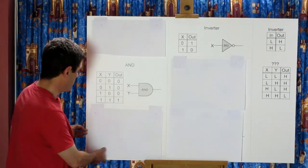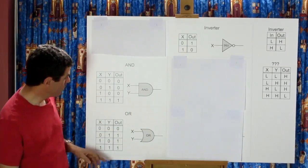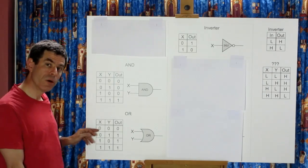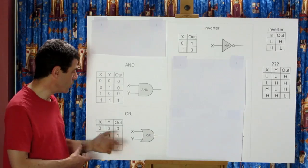The OR function looks like this and here we get a 1 being output when x is 1 or y is 1. So that's the OR function.